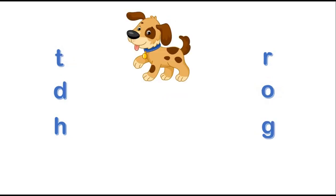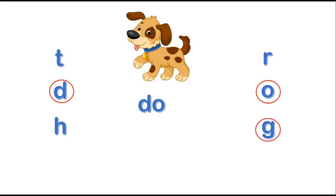Look at the next one. What's this in the picture? Yes! It's a dog. How can we write the word dog? What is the first letter? The first letter is D. Next one: O. G.